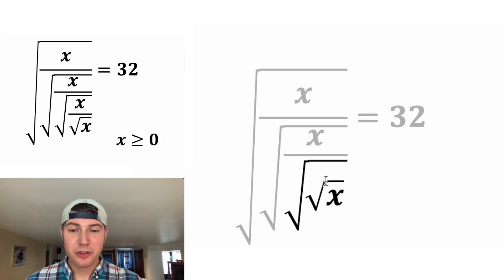Now let's focus on the square root of square root of x. The square root of a square root of a number is the same thing as the fourth root of a number.